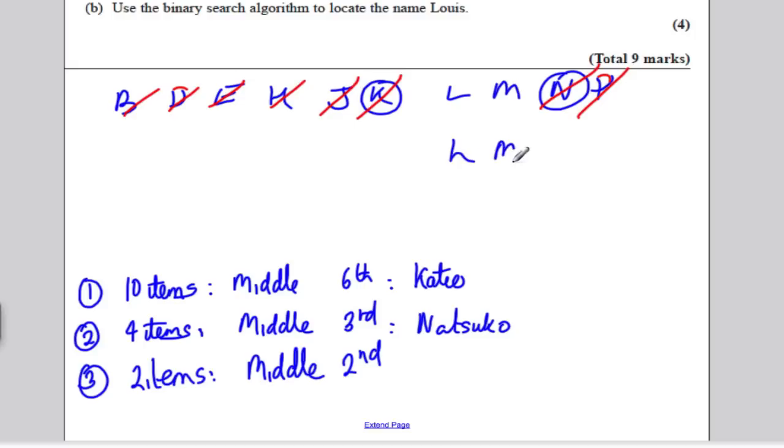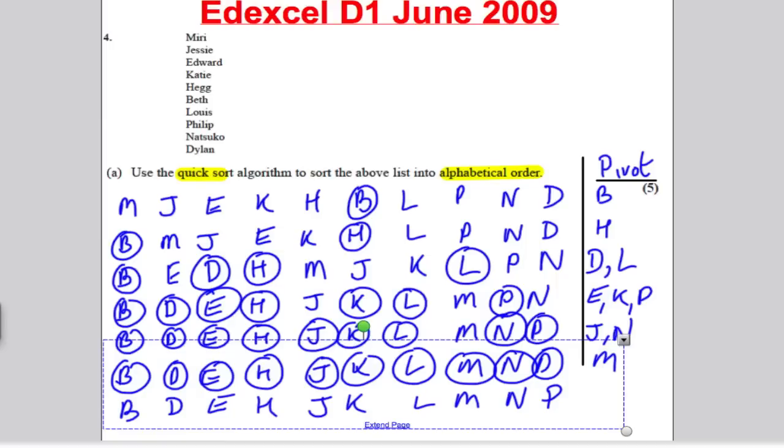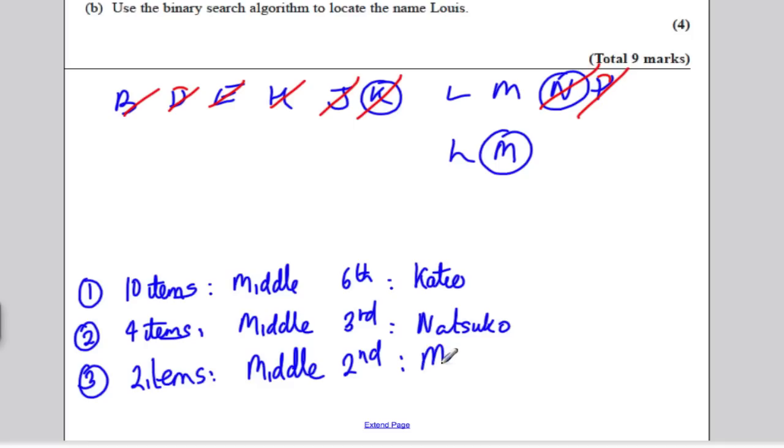So then you've got yourself two items. The middle is the second, so L and M, and therefore you would highlight M, and M was standing for Miri. Now you know that Louis should be before that, so you cross off M and you're left lastly with Louis. So again, you've been able to find Louis there by using the binary search algorithm.